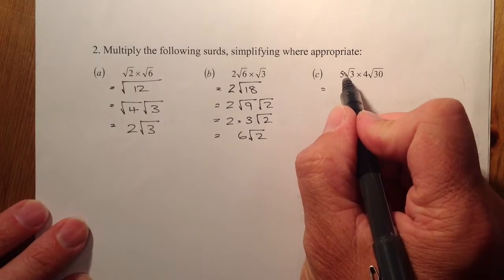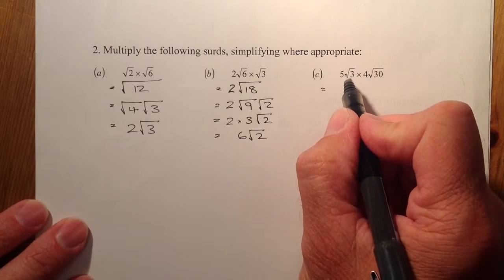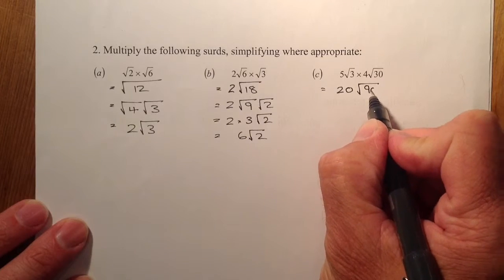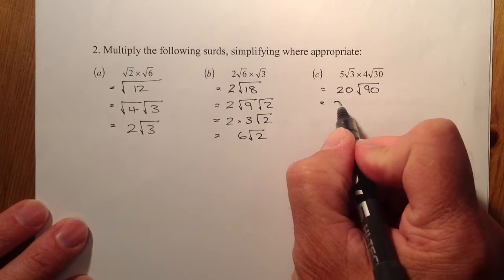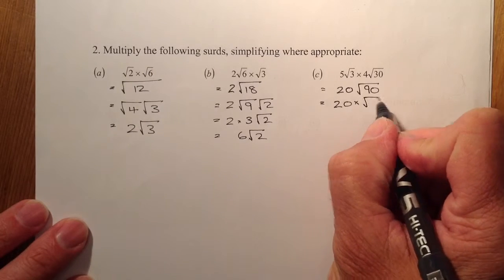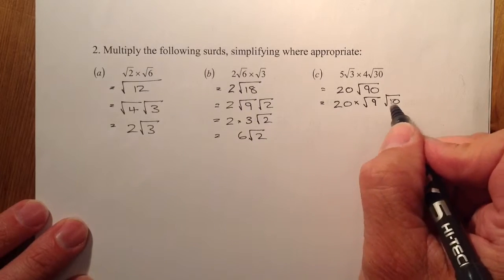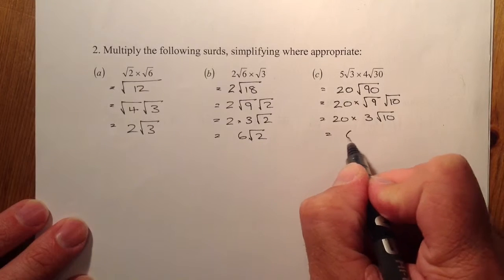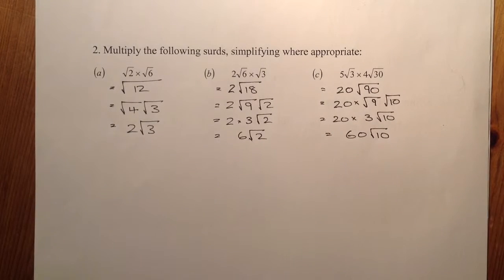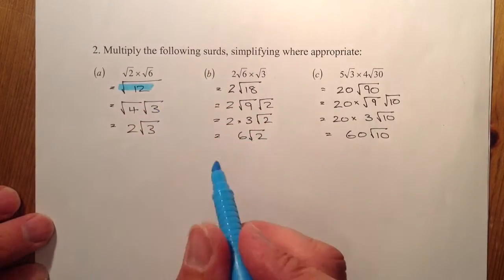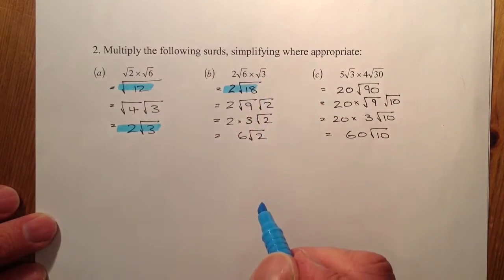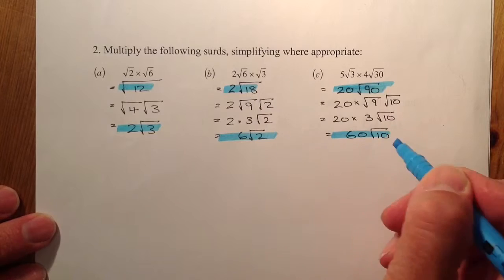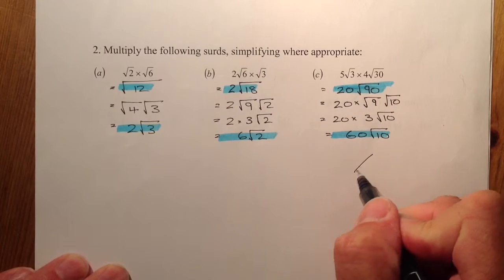For c, I'll multiply the numbers together first. 5 times 4 gives me 20, and then root 3 times root 30 gives me root 90. From there I'll simplify root 90 using root 9 and root 10, since 9 times 10 gives me 90. The square root of 9 is 3, so multiplying that out gives 60 root 10. For marking: one mark for getting root 12 in part a, one mark for the final answer; then root 18 and 6 root 2 for part b; then 20 root 90 and finally 60 root 10 for part c. This question is out of 6 marks.